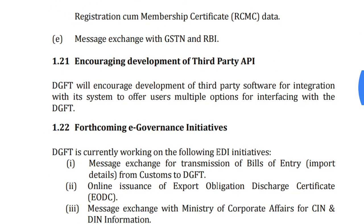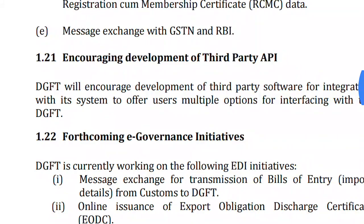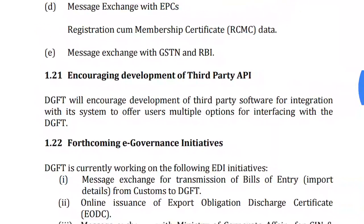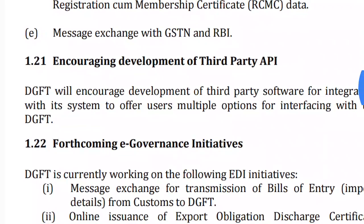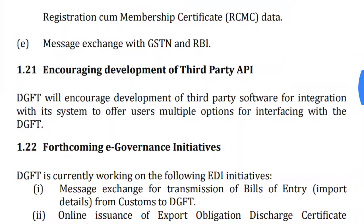Hi, this is Shamra Tour and today we will study Chapter 1 of the Foreign Trade Flow Policies, second part. We will start from paragraph 1.20. In this paragraph we will study regarding specific facilities provided by the DGFT to the exporter and importer. Paragraph 2.1 talks about encouraging development of third-party APIs — why and how DGFT encourages third parties.